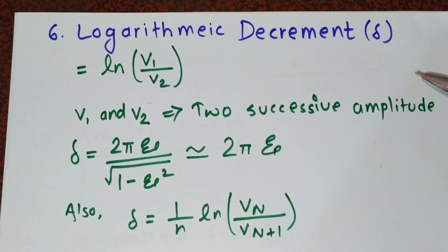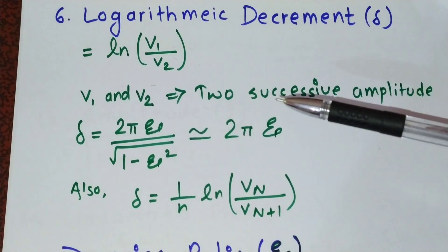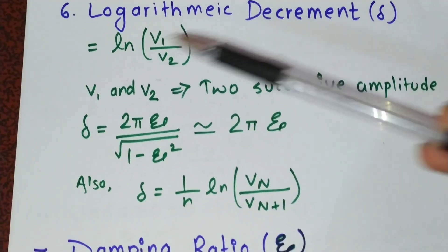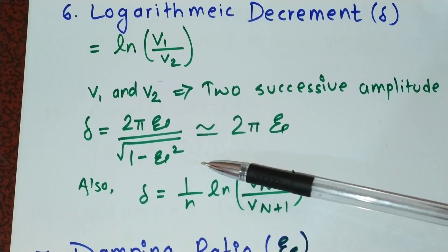Logarithmic decrement δ equals ln v1 by v2, where v1 and v2 are two successive amplitudes. When it comes into vibration, the first cycle is greater, so we take the greater amplitude as v1 and the smaller one as v2. If number of cycles is given, then δ equals 1 by n ln v1 by vN+1. We have one more relation of δ which equals 2π ξ by root 1 minus ξ squared, or approximately 2π ξ.